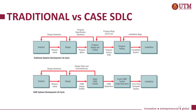Here we can see the differences between the Traditional versus CASE System Development Lifecycle. Both have five phases, but the main difference is in program design and coding for the traditional, and uppercase toolset for the CASE system. In the traditional system, during program testing and installation, you can still go back to a previous phase to fix installation bugs and program errors. But for CASE system development, it goes directly to the lower CASE toolset — the code generator — and then you will have an error-free computer system for the installation process.